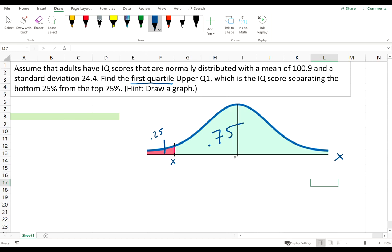We have a mean of 100.9 and a standard deviation of 24.4. Now, we don't have to convert to Z scores because Excel has a function for the non-standard normal distribution.